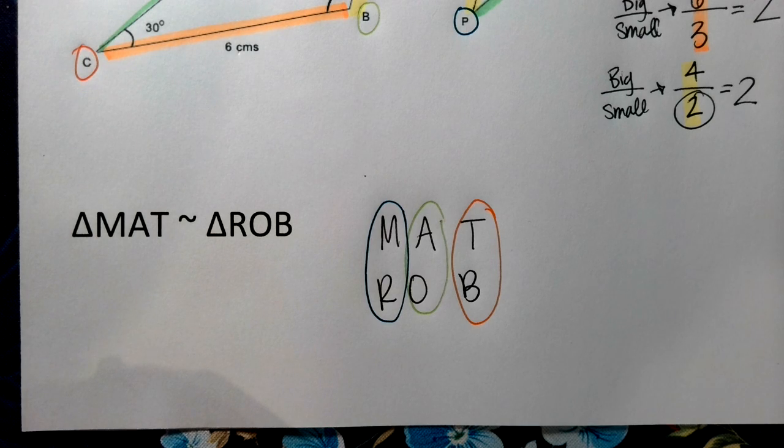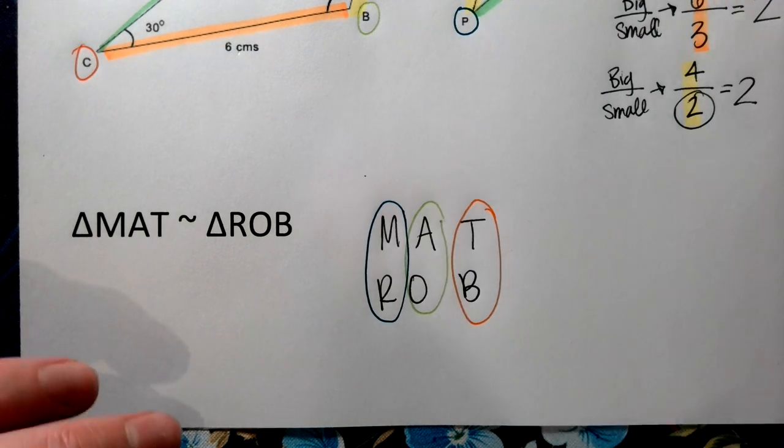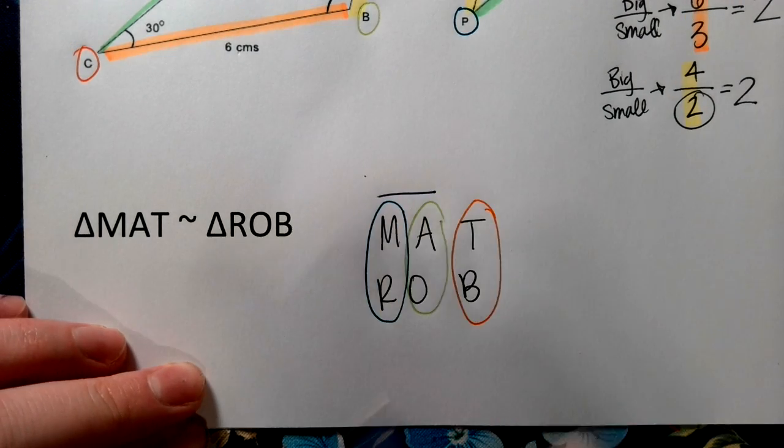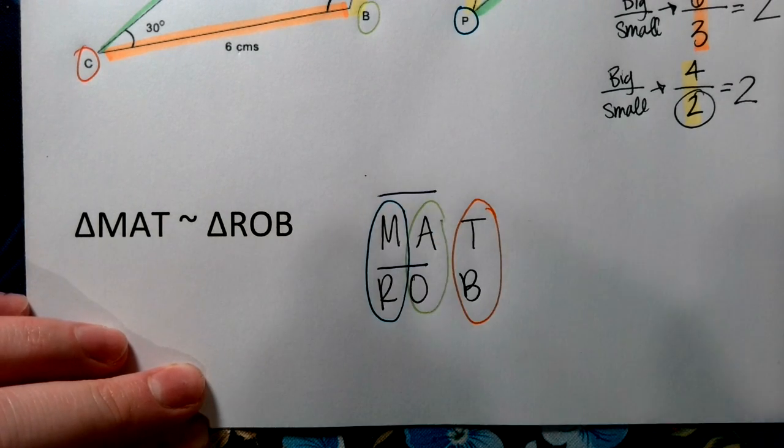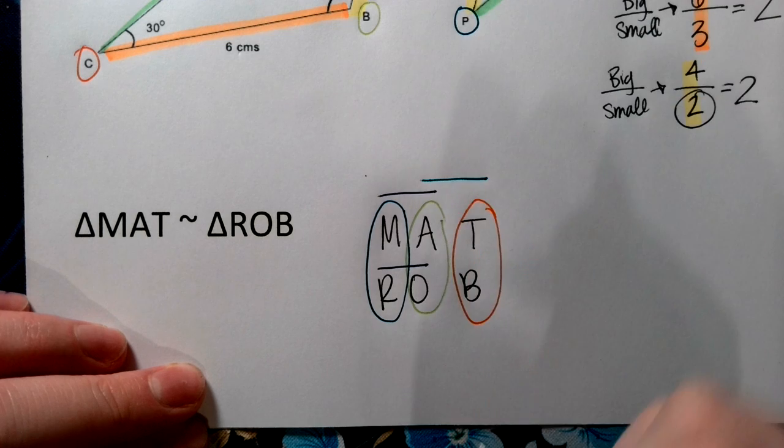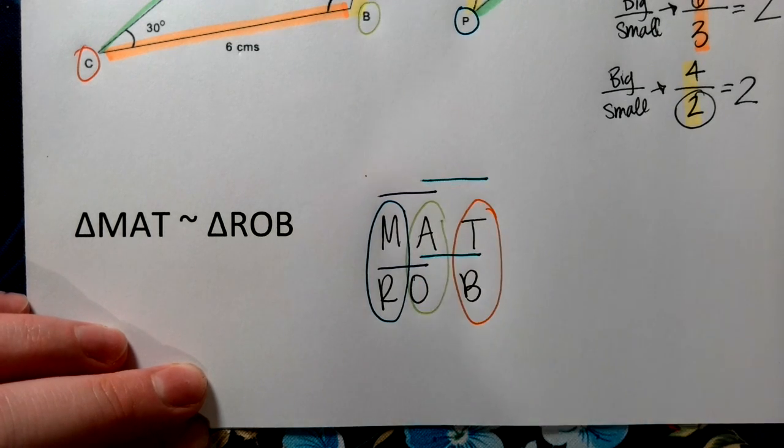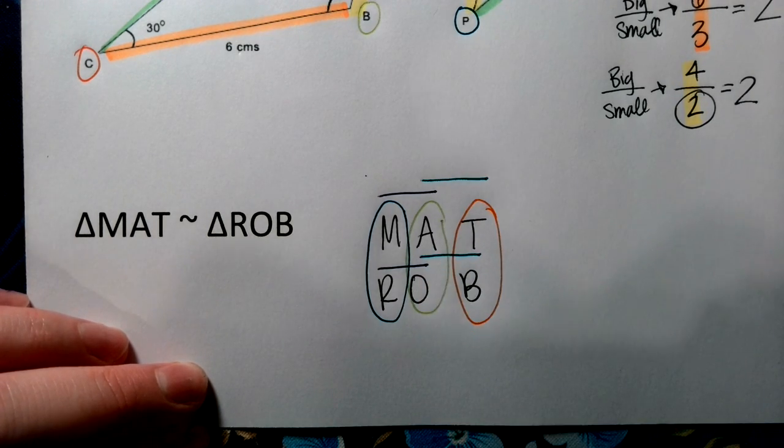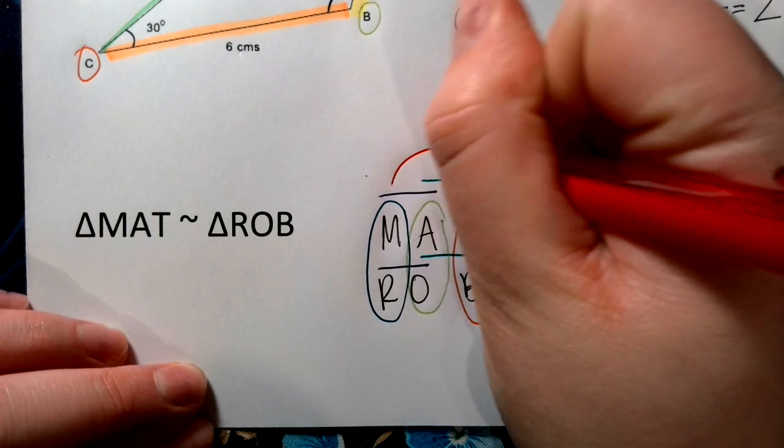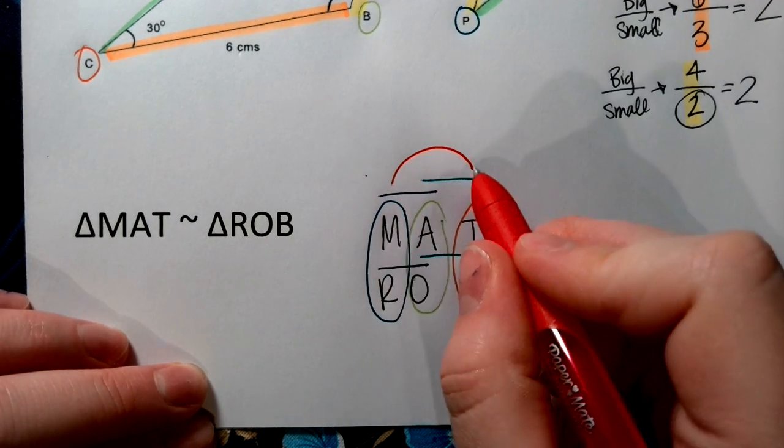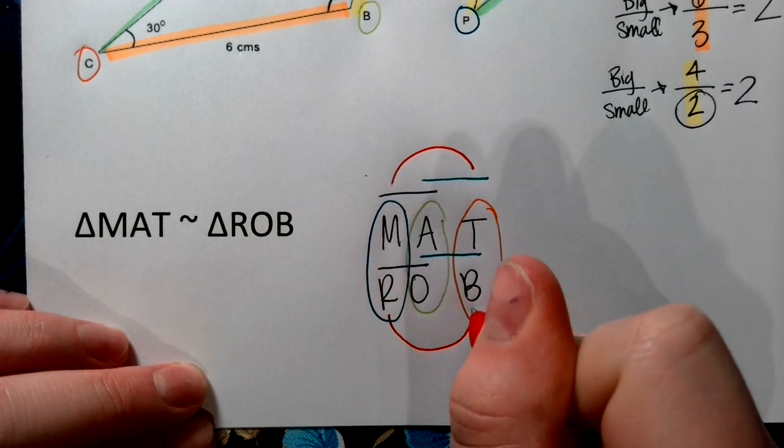You can also use this to see side lengths. So I would see that side MA would be similar to side RO. Side AT would be similar to side OB. And then if I had side MT, excuse me, that would be similar to side RB.